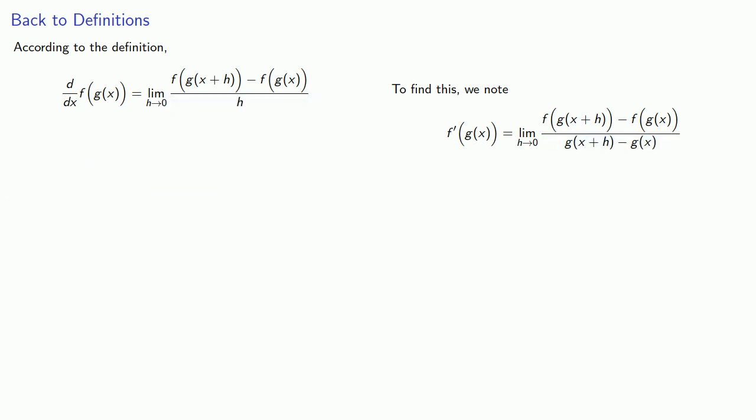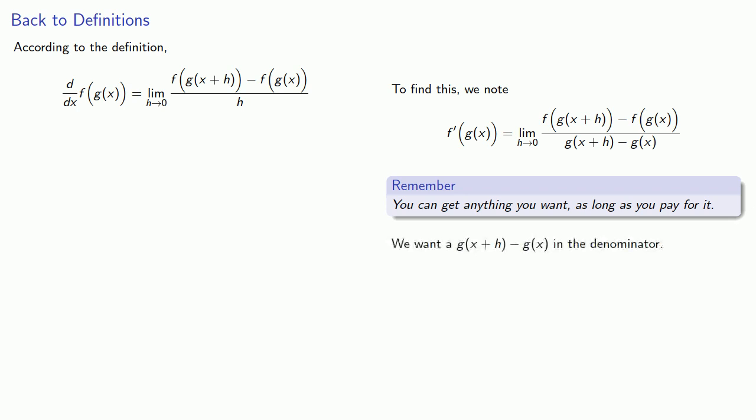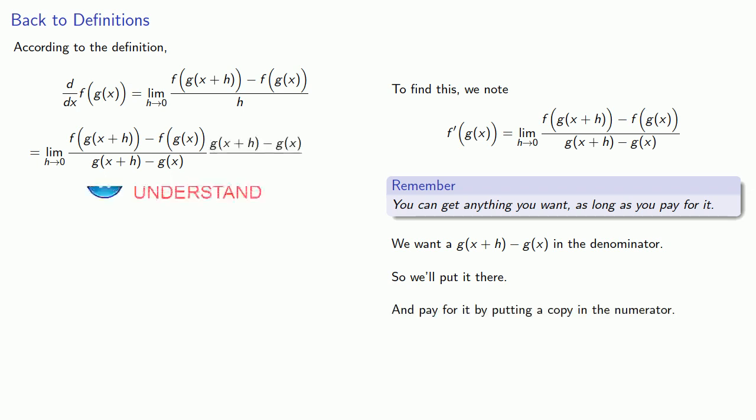But remember, you can get anything you want as long as you pay for it. We want a g of x plus h minus g of x in the denominator, so we'll put it there and pay for it by putting a copy in the numerator. And don't forget the denominator also had that factor of h, so let's keep that.